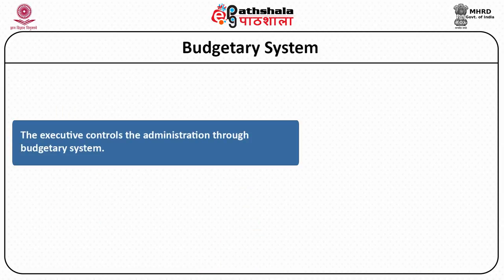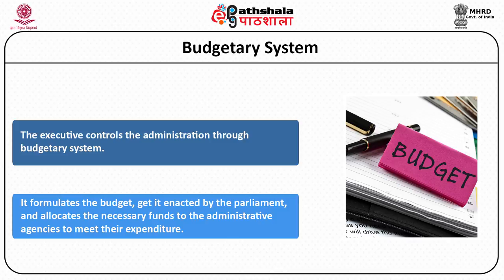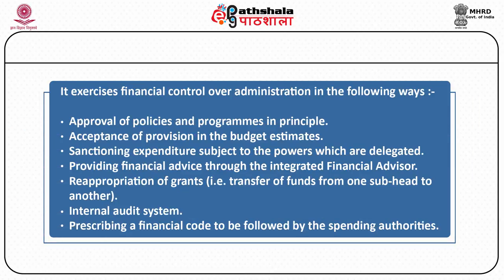The executive controls administration through the budgetary system by formulating the budget, getting it enacted by parliament, and allocating necessary funds to administrative agencies. The Ministry of Finance plays an important role in this, exercising control through approval of policies and programs, acceptance of budget estimates, sanctioning expenditures, providing financial advice through integrated financial advisors, re-appropriation of grants — transferring funds from one subhead to another — and prescribing a financial code for spending authorities.